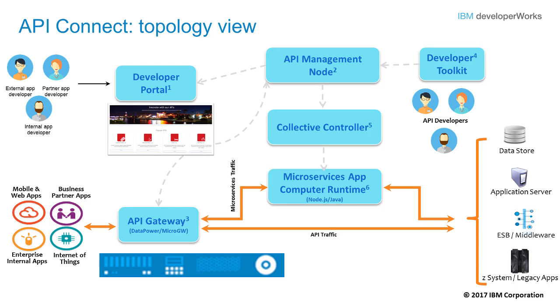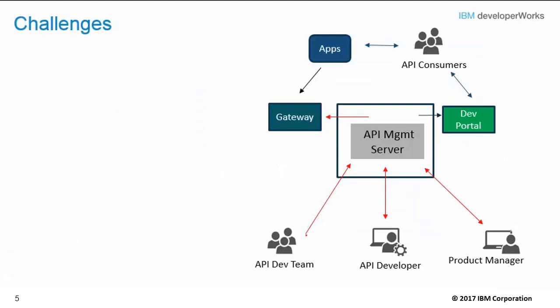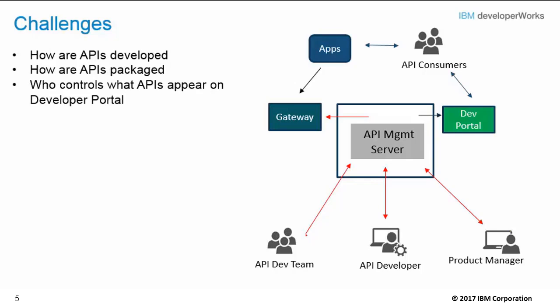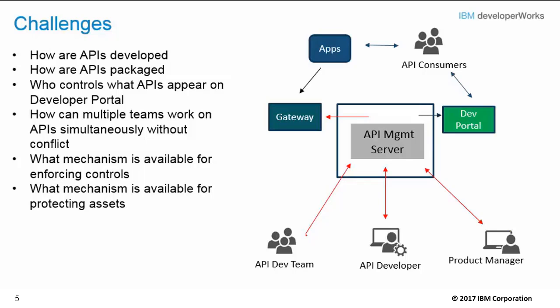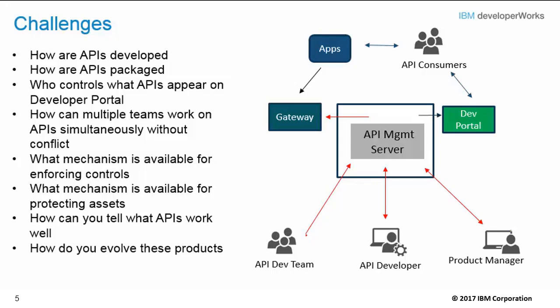All of this is offered by API Connect in a largely code-free environment. The need to provide API products through different business units and using the API Connect topology raises a number of issues that many customers ask. For example: How are these APIs developed? How are they packaged? Who controls what APIs appear on the developer portal? How can multiple teams work on APIs simultaneously without conflict? What mechanism is available for enforcing the controls that need to be in place? What mechanism is available for protecting the various assets? How can you tell what APIs do and do not work? And how do you evolve these products? This presentation and this course will provide answers to these questions.